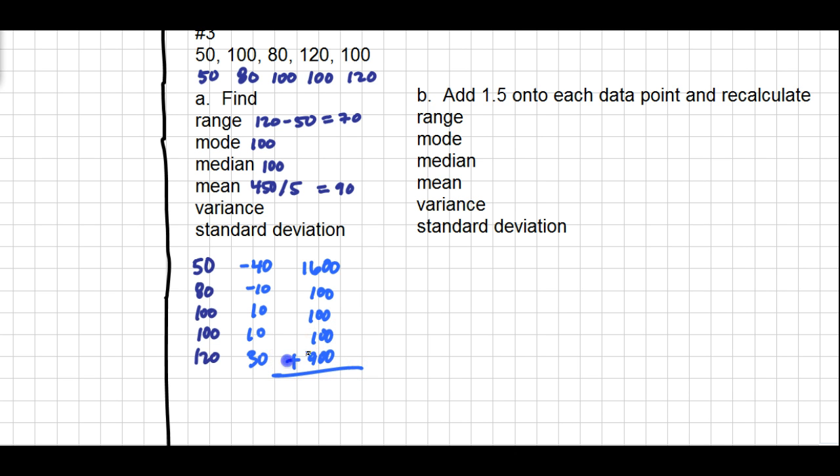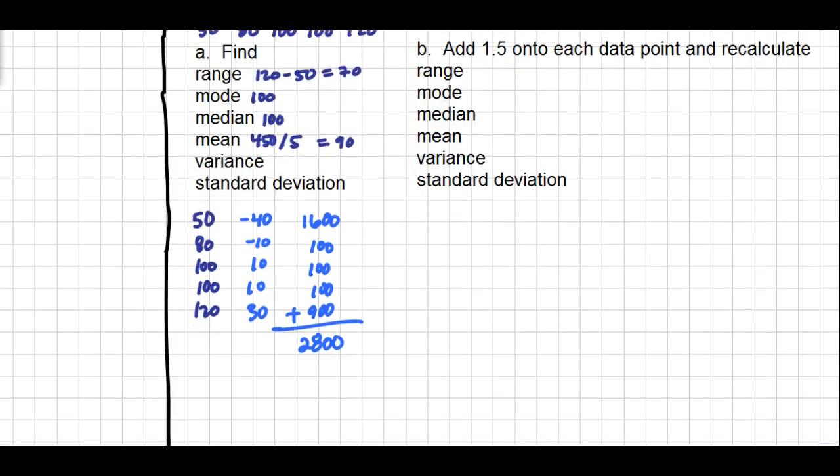Once you've squared them, you're going to add them up and then divide by n minus one. Some lessons teach that you should be dividing by n, some lessons teach you should divide by n minus one. You should ask your teacher which way you're supposed to go on this. I'm going to encourage my students - we only learned one formula and that was to divide by n minus one, so we would divide here by four.